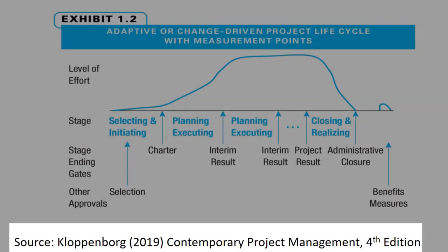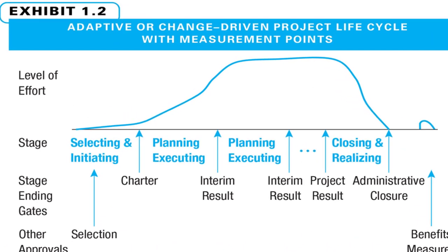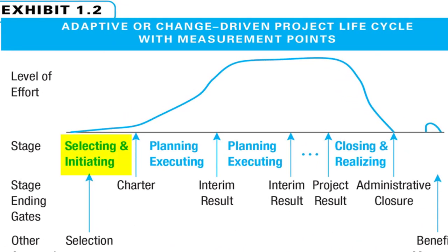Other textbooks will have similar lifecycles. In an adaptive or agile project, the first stage is identical to a predictive or waterfall project. The organisation has to ensure it has selected the correct project to pursue, so selecting and initiating is the first stage. A project charter is developed and, if approved, the project becomes official.